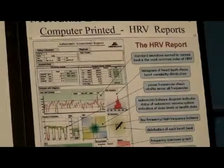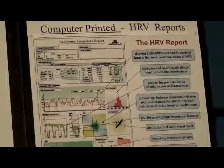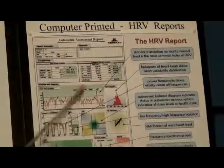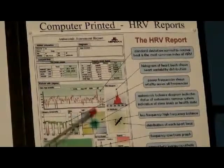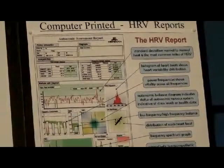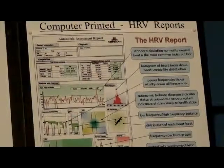Up here is another way of presenting the DPA, talking about the computer printout, and this shows the heart rate variability and what it all means with arrows coming in — just another representation of what's done here.